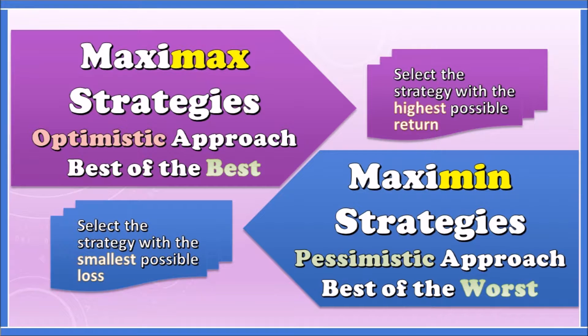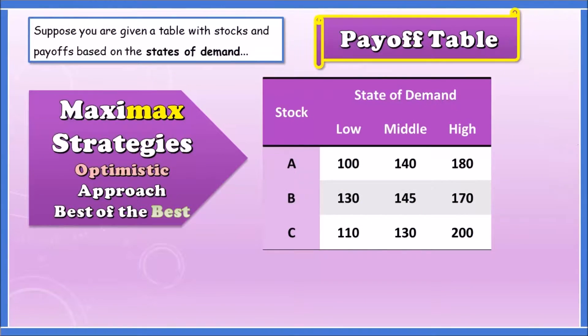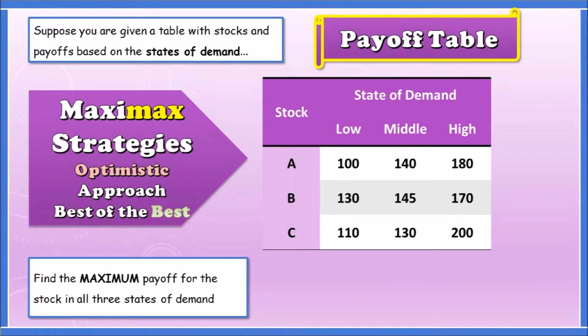Let's jump into example one — the maxi-max. Suppose you're given a table of stocks and payoffs based on the states of demand. Here's our payoff matrix: we've got stocks on the left and low, middle, and high states of demand from 100 to 200. The first thing we do is find the maximum payoff for each stock.